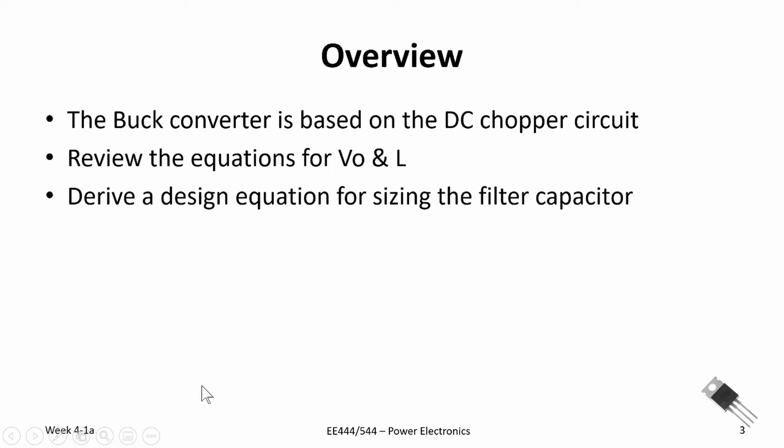Let's look at the overview for this video sequence. One of the things I want to touch on is looking at the buck converter as a DC chopper — I probably didn't do a good enough job of that in the past video, so I want to review that again. It's really a DC chopper circuit with some filtering attached to it. We'll review the equations governing output voltage and inductor sizing, and then finish by deriving a design equation for sizing the filter capacitor based on the ripple voltage requirement across the load.